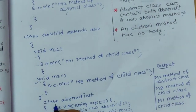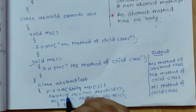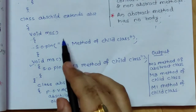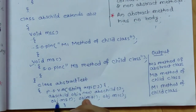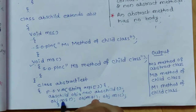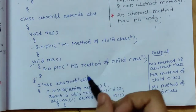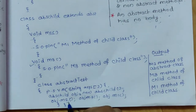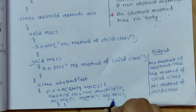Next is class abstract test, which is the main class. In the main class, we have created an object of this child class. After creating the object of the child class, we have called OBJ.M2 — that is this M2 method — then OBJ.M3 and OBJ.M1.